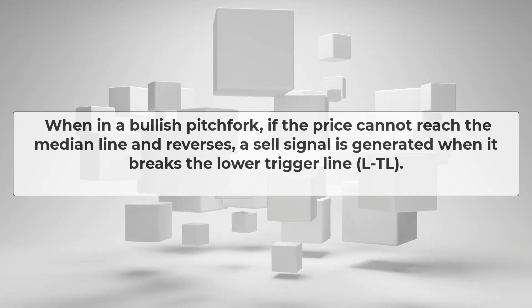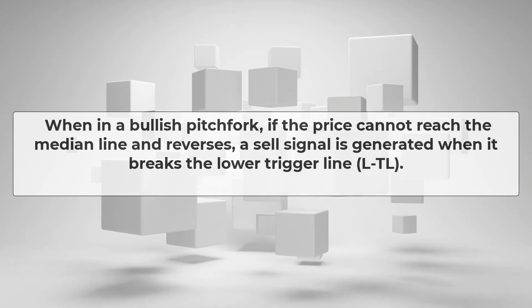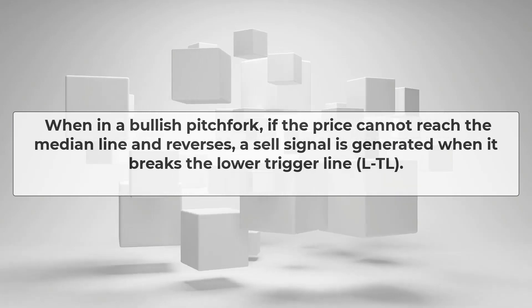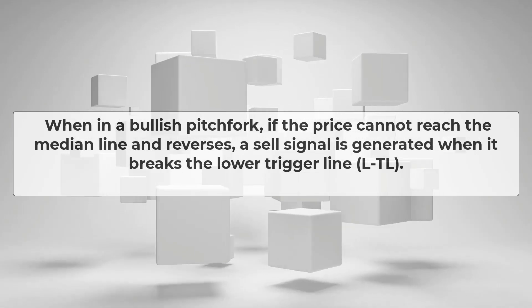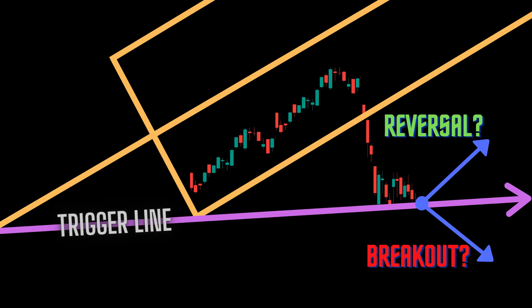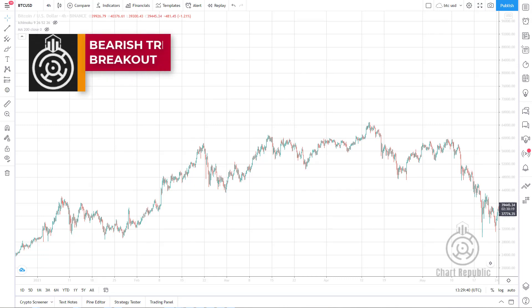As a general rule, when in a bullish pitchfork, if the price cannot reach the median line and reverses, a sell signal is generated when it breaks the lower trigger line, or LTL. In fact, the lower trigger line has two roles in the market: on the one hand it acts as a support area, and on the other hand when it breaks, it plays the role of a resistance area.